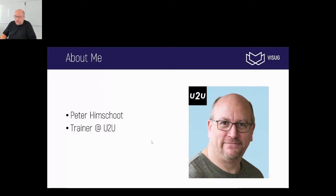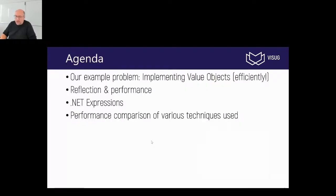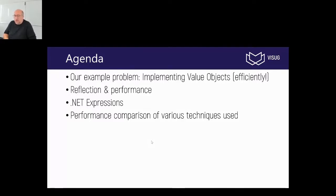Let's have a look at what we're going to discuss in this session. I want to start with an example problem — the concept of value objects — and implement these things really efficiently. There are several options: I could just hard-code everything, we could use reflection, or we could use .NET expressions. The target of this talk is to show you how you can generate on the fly very efficient code that has nearly the same performance as hard-coded code, but without having to do all the work.